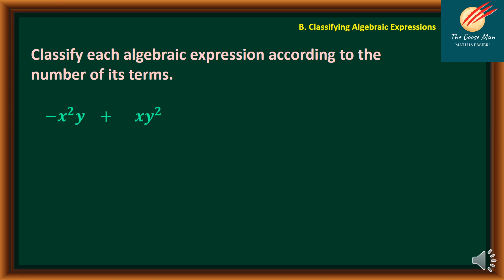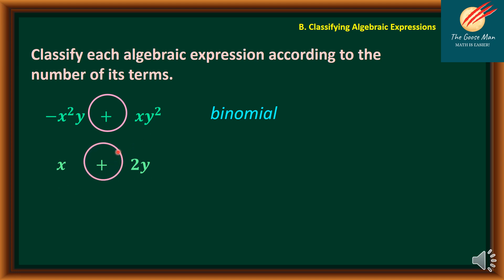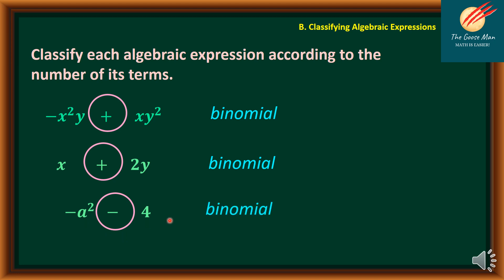Consider negative x squared y plus xy squared. There is a plus symbol separating the expression into two terms: negative x squared y and xy squared — so this is a binomial. Another example: x plus 2y is also a binomial, separated by a plus symbol. And negative a squared minus 4 is also a binomial, separated by a minus sign. Note that the negative sign on a squared is the sign of that term, not a separator. A binomial is a polynomial with two terms.